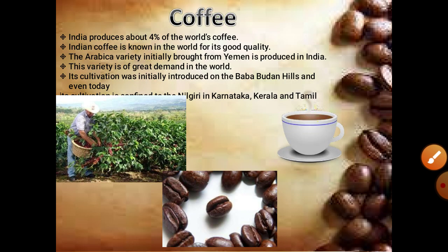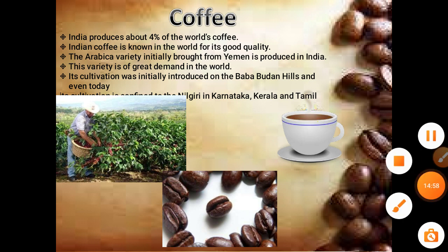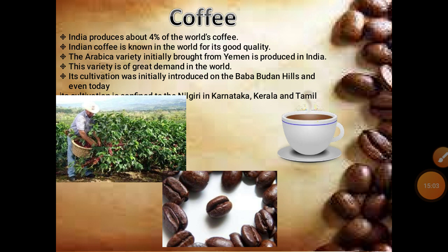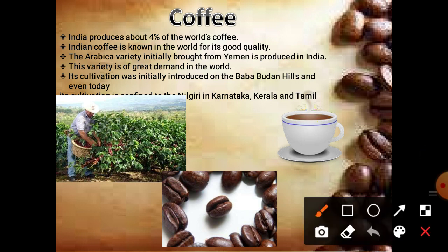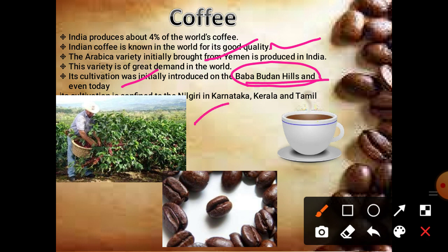After tea, the second plantation crop is coffee. India produces about 4% of the world's coffee. Indian coffee is known worldwide for its best quality. The Arabica variety was initially brought from Yemen, just as tea was brought from China by the British. Its cultivation was initially introduced on the Baba Budhan hills in Andhra Pradesh. Karnataka, Kerala and Tamil Nadu are the important states for coffee cultivation.